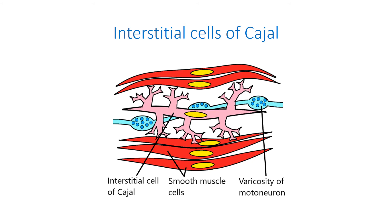The gastrointestinal tract contains non-neuronal pacemaker cells which are called interstitial cells of Cajal. They are located within different layers from the esophagus to the internal anal sphincter. Interstitial cells of Cajal contain a fusiform cell body with a thin cytoplasm, oval nucleus and two to five primary dendritic-like processes, which divide further into the secondary and tertiary processes. Interstitial cells of Cajal generate rhythmic electrical activity in the smooth muscle cells. These electrical oscillations are called slow waves.